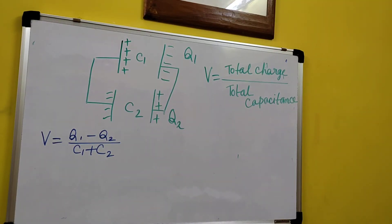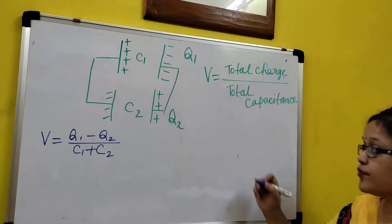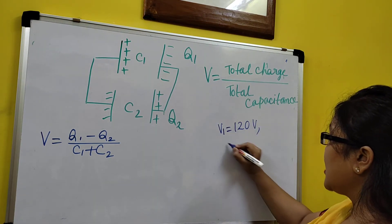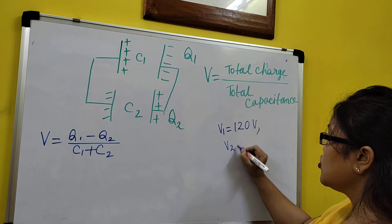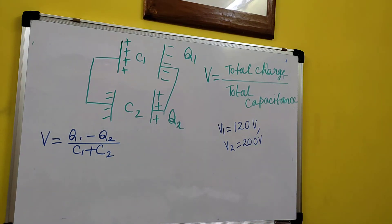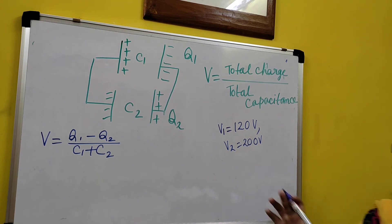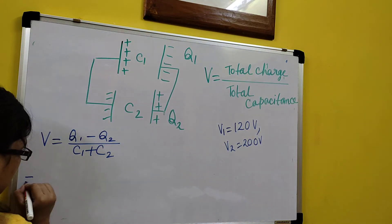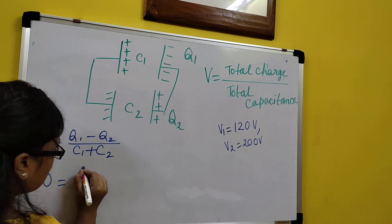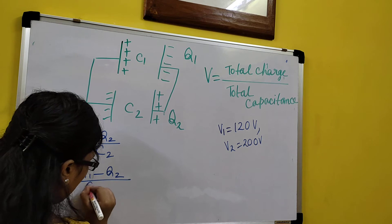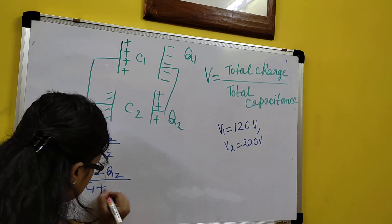Now V1 is 120 volt and V2 is 200 volt. The common potential V is 0 volt, which means this V equals 0. So: 0 = (Q1 − Q2) / (C1 + C2).